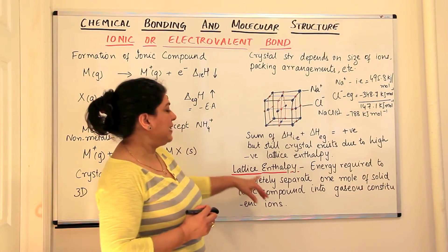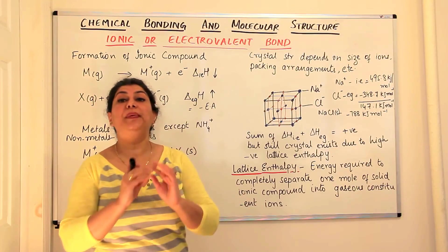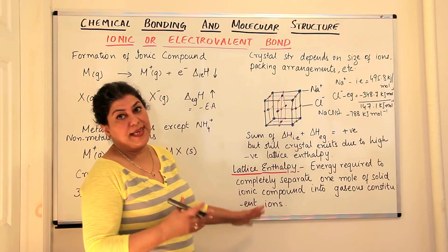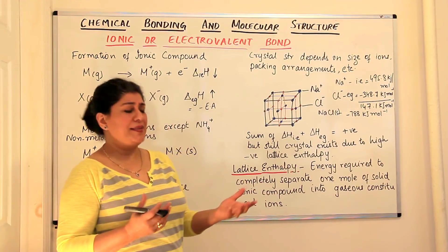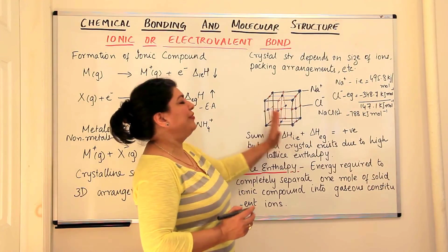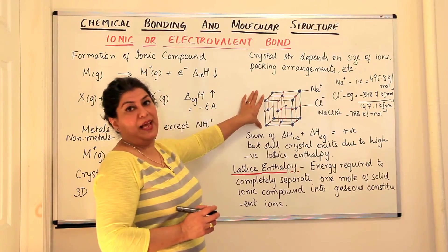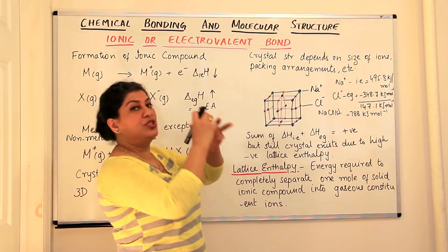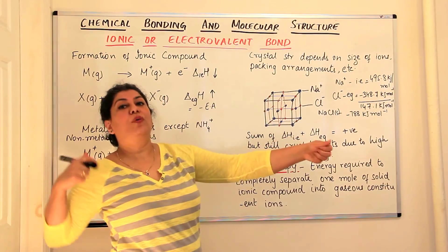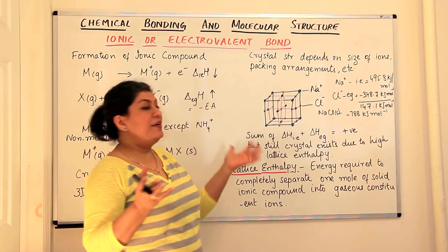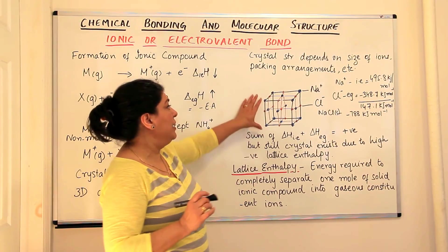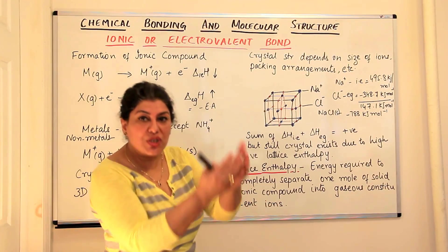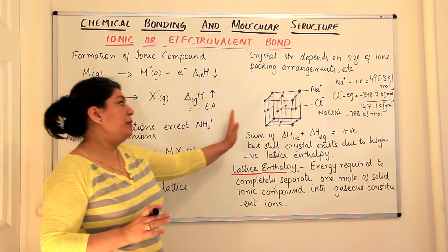Lattice enthalpy is defined as the energy required to completely separate one mole of solid ionic compound into its gaseous components — that is, the gaseous cations and anions. It is equal to the amount of energy given out when one mole of the electrovalent compound is formed. So whether it is the energy given out in the formation of one mole of the ionic compound, or the energy required to separate them back into individual gaseous ions — both would be the lattice enthalpy.